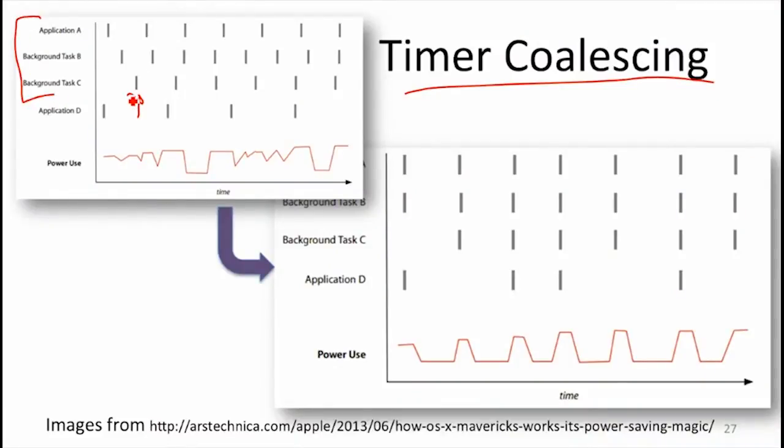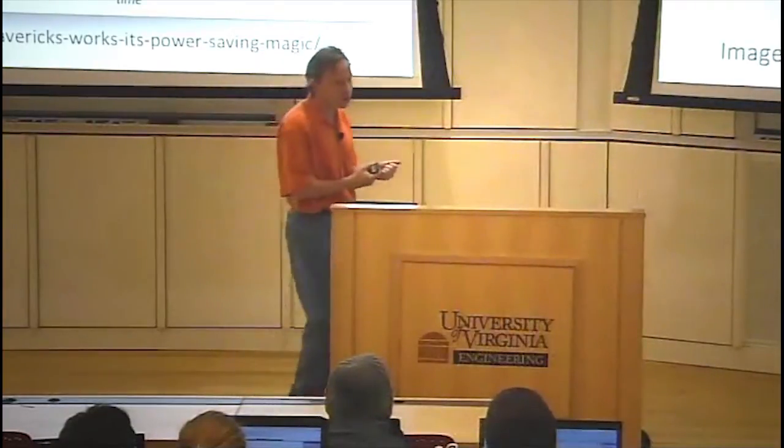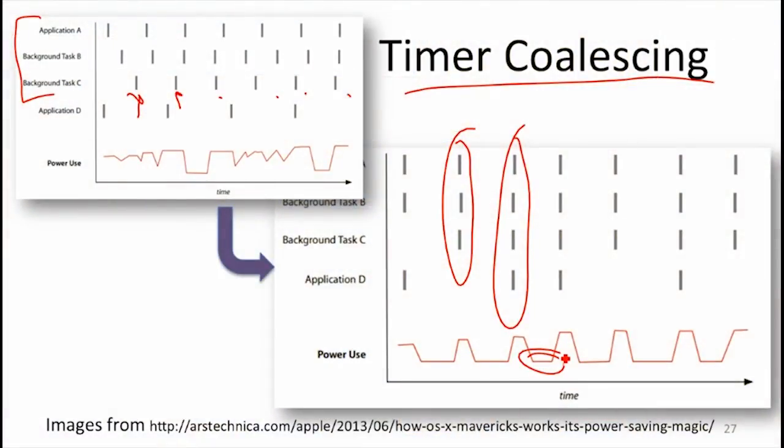You've got all these different programs, and they're setting timers, and they need to go off at some particular time. But the reality is they're not that precise. The fact that a timer is going to go off within a millisecond is probably not noticeable to any user and not noticeable to the program in any meaningful way. What the OS does is schedule the timers to all go off at the same time. When those timers go off, you wake up the processor, you run the code that each of those programs needs to do, and the scheduler can schedule all of those, and then you go back to idle, and you maximize the work that you do each time you wake up, and you maximize the idle time.